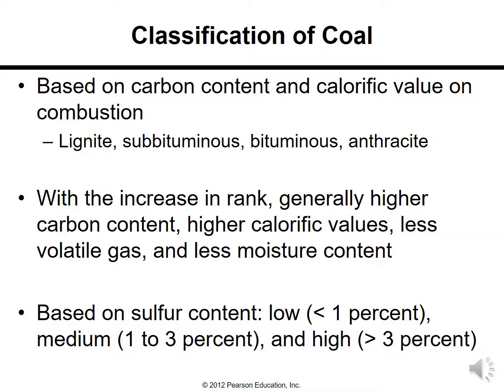Based on carbon content and calorific value on combustion, coal is categorized as lignite, subbituminous, bituminous, or anthracite. With increasing rank, there is generally higher carbon content, higher calorific values, and less volatile gas and moisture content. Based on sulfur content, you have low, medium, and high sulfur coal.